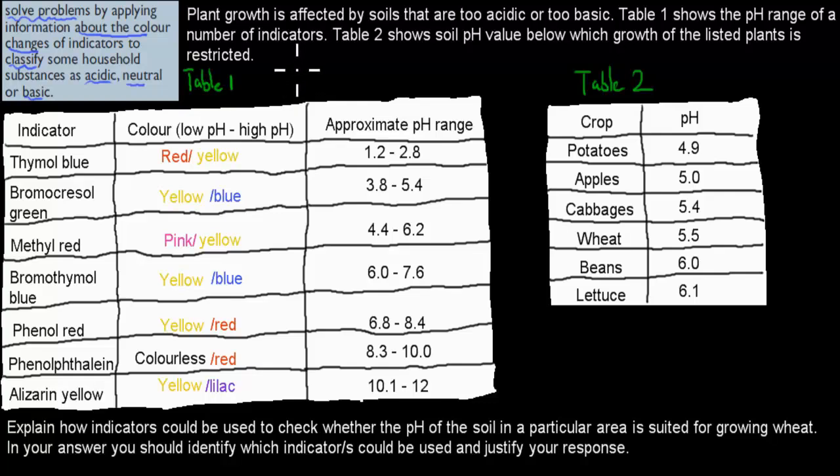When it comes to this question, it says, plant growth is affected by soils that are too acidic or too basic. Table 1 shows the pH range of a number of indicators. Table 2, this one here, shows soil pH value below which growth of listed plants is restricted. So the actual question is explain how indicators could be used to check whether the pH of the soil in a particular area is suited for the growth of wheat. In your answer, you should identify which indicators could be used and justify your response.